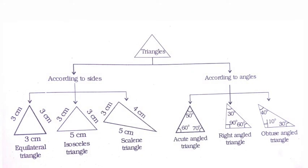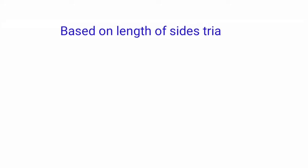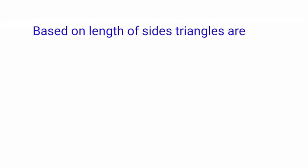This diagram shows the classification of triangles. Based on the length of the sides, triangles are of three types.